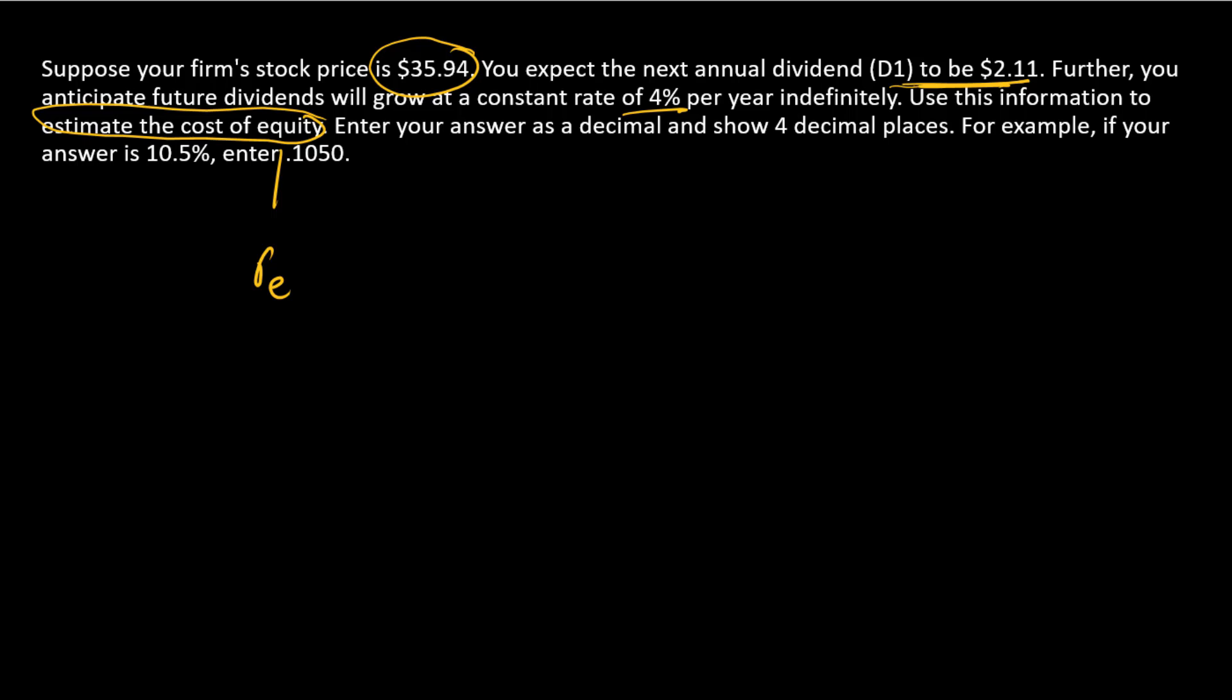But we do know the cash flows, and we have a market-determined price. And so what we can do to estimate the cost of equity is use a valuation formula and insert the market price, and then solve for the discount rate. And that's going to become our estimate of the cost of equity.